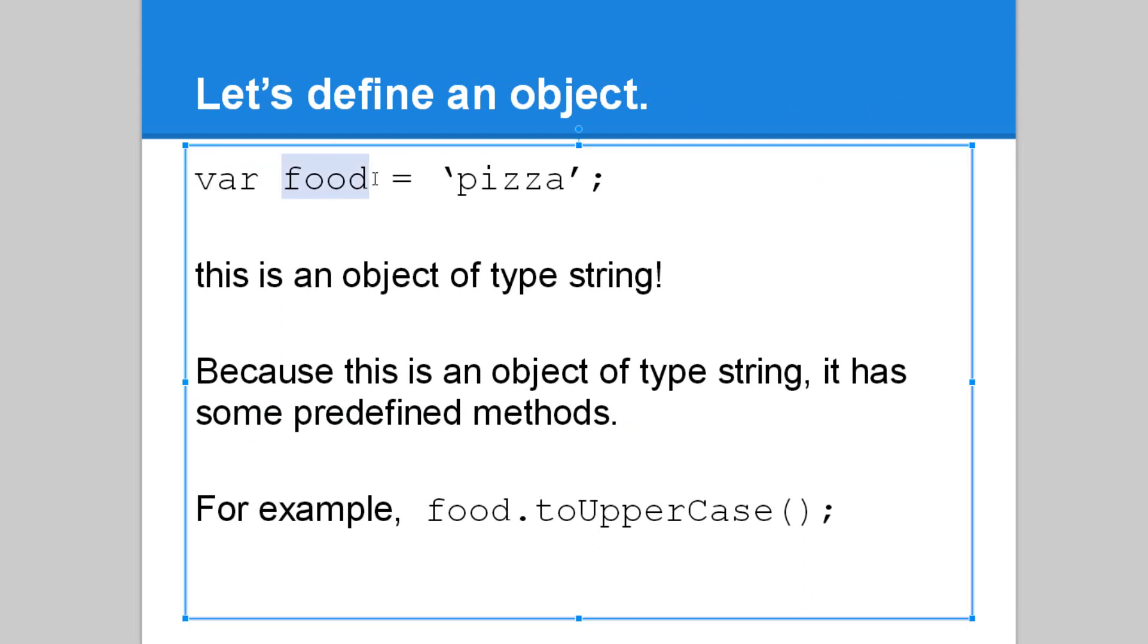Here we have a variable with the name food, and we assigned it the value pizza. Food is an object of type string. It's an object because we defined it using the var. It has a value that is a string because it's in quotation marks. Because this is an object of type string, it has some predefined methods.